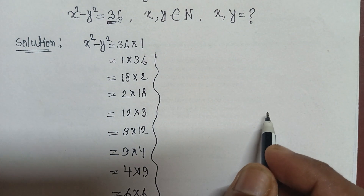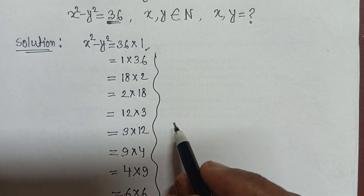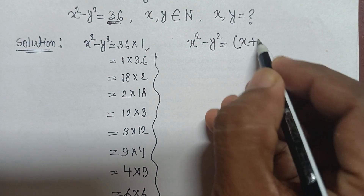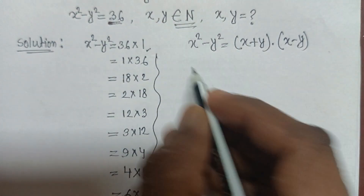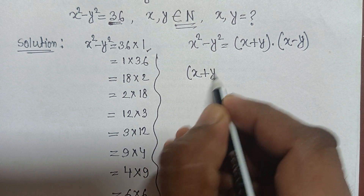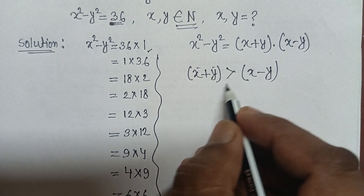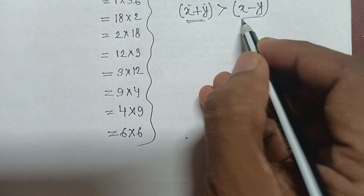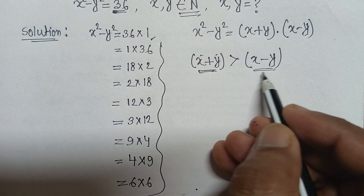We know x squared minus y squared equals (x plus y)(x minus y). For every natural number, it should follow that x plus y is greater than x minus y. For any natural numbers x and y, x plus y should always be greater than x minus y.